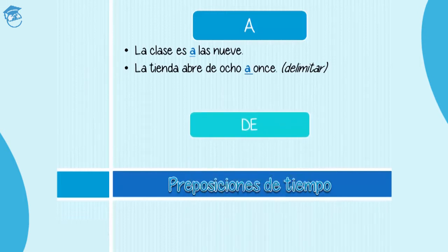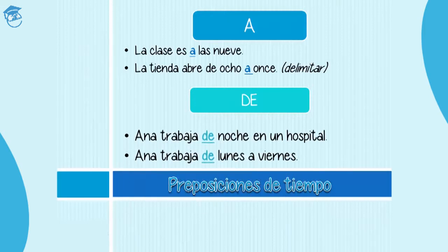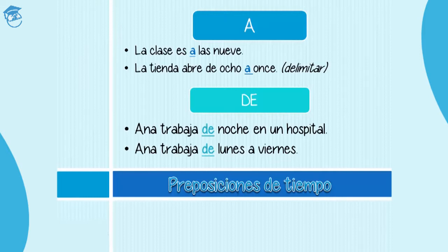Another preposition of time is de. For example, Ana trabaja de noche en un hospital — de noche, when you're talking about a particular moment during the day. Ana works at night in a hospital. Ana trabaja de lunes a viernes. Here, as we saw in the previous phrase, you combine de and a to delimitate — de lunes a viernes, de ocho a once. You combine both and you delimitate a moment.